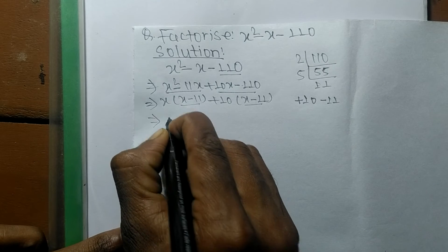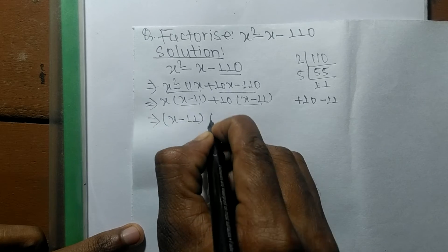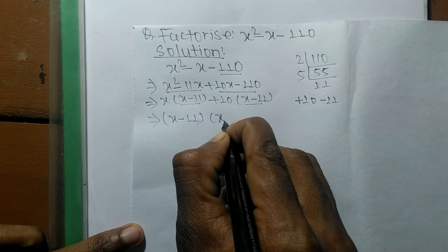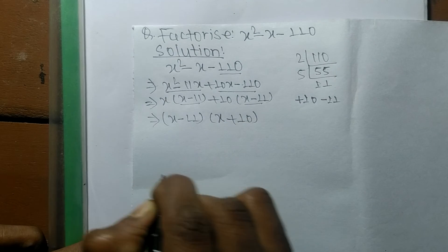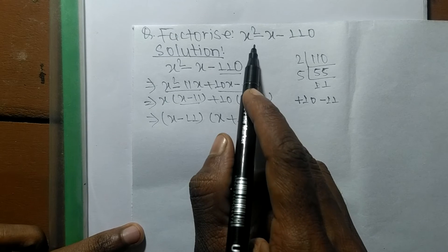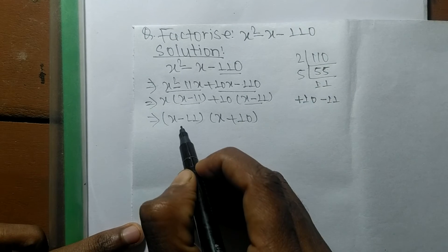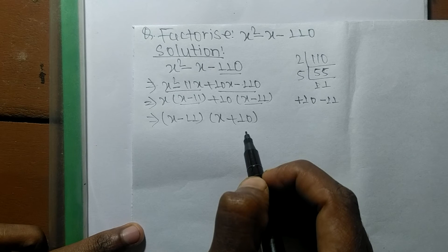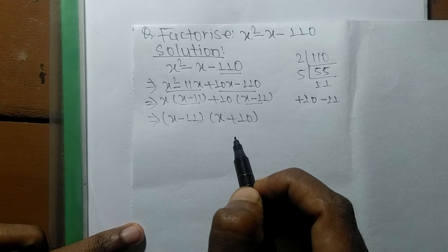Both pairs share the common factor x minus 11. Taking x minus 11 as common, the remaining terms are x from the first expression and plus 10 from the second. So the factors of x squared minus x minus 110 are (x minus 11)(x plus 10).